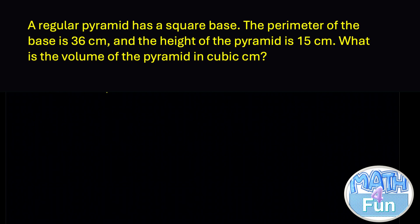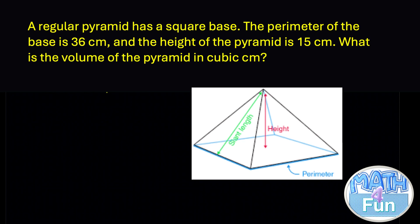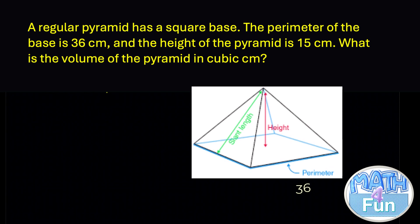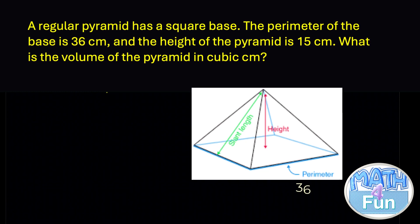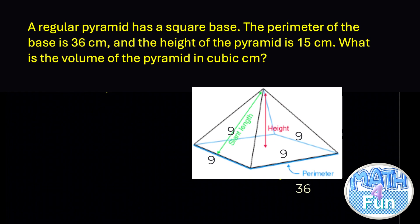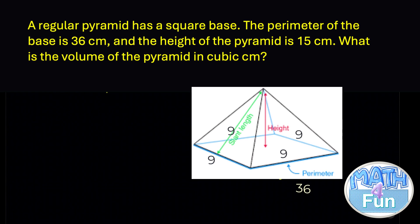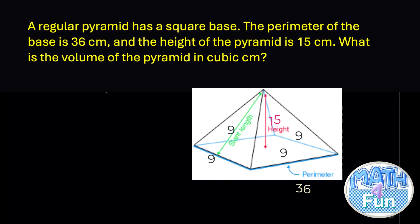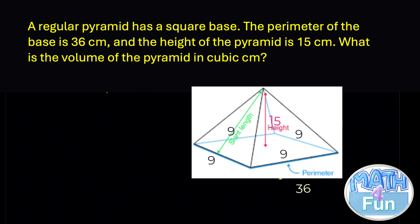Looking at the pyramid with a square base: the perimeter is 36, and since it's a square all sides are equal. Dividing 36 by 4 gives each side a length of 9. So the side of the square base is 9, and the height of the pyramid is 15.